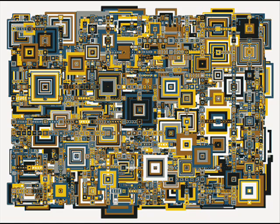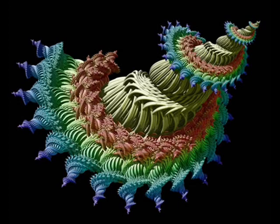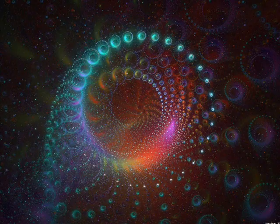Fractal art is art, usually visual, that is generated by an algorithm — an algorithm being a method expressed as a finite list of well-defined instructions for calculating a function. Fractal art is similar to algorithmic art in that it is the application of fractal geometry produced by an algorithm.